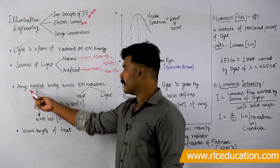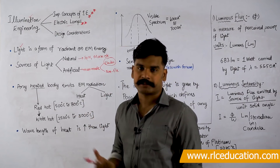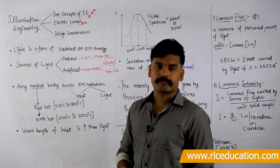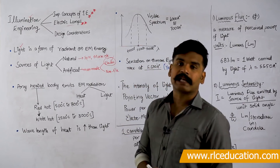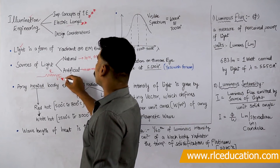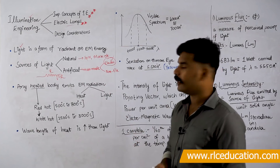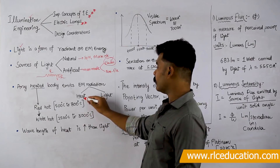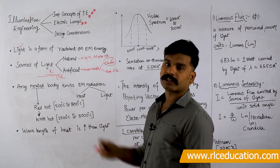How do you get light? If you are heating any body, it will emit electromagnetic radiation. You may supply external heat or pass electric current through that body — that is the principle used in electric lamps. Every body inherently has some resistance, so when current passes through it, it gets heated up and that heat energy is given by I²R. Any heated body emits electromagnetic radiation, which may be heat, light, or a combination of both, depending on the temperature.